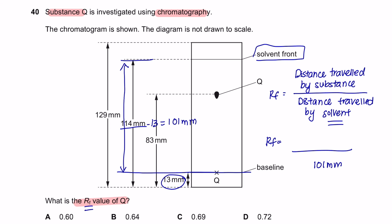We're looking to find Rf value of Q. So again, we'll find the distance from the baseline to where Q stopped, which is over here. It will be 83 mm take away 13 mm. That will be 70 mm. So just use your calculator and you will get 0.69. So the answer is C.